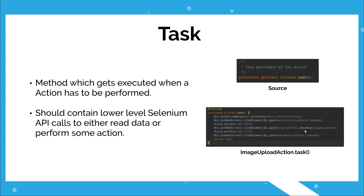The task method is executed when an action has to be performed. It should contain the lower level Selenium API calls to either read data from the UI or to perform some action on the UI. On the right, you can see an example of the task method. This is the Image Upload Action task. Essentially what it does is first it goes to the group, then it presses the attachment icon, then it inputs the location of the image, and then it presses the send button.